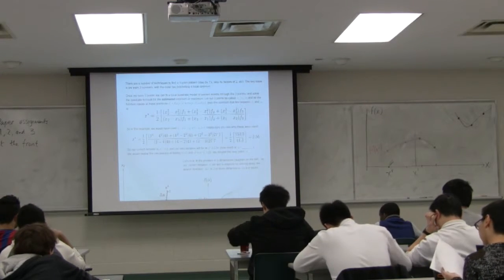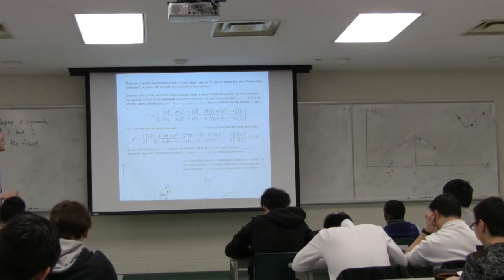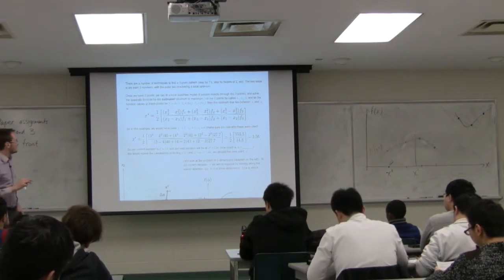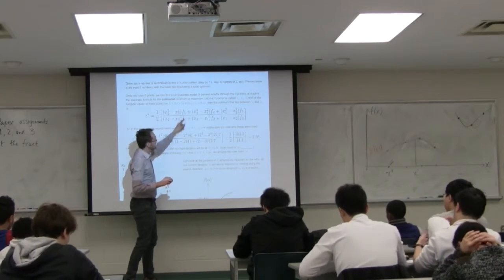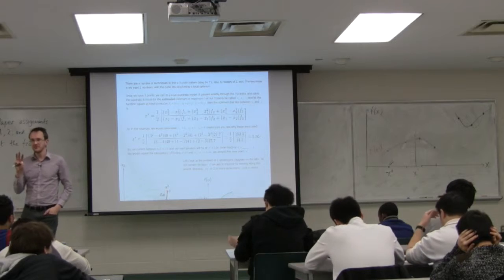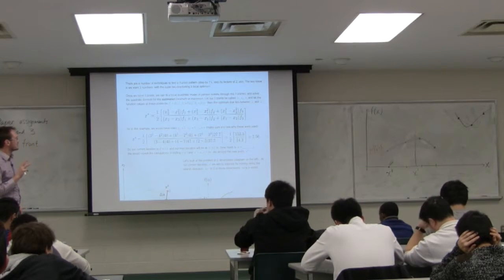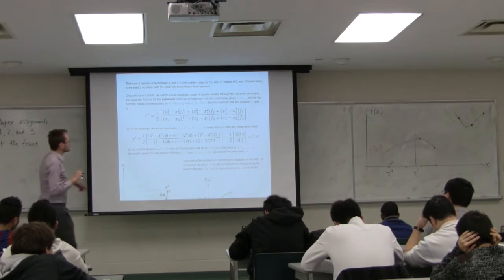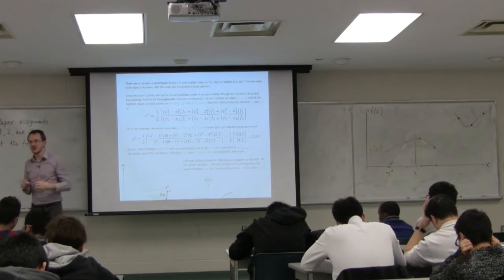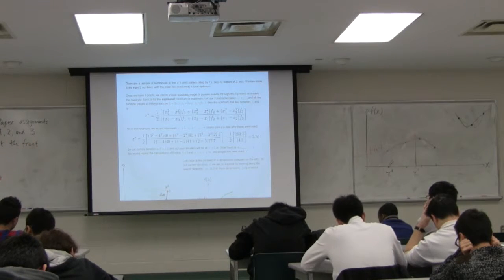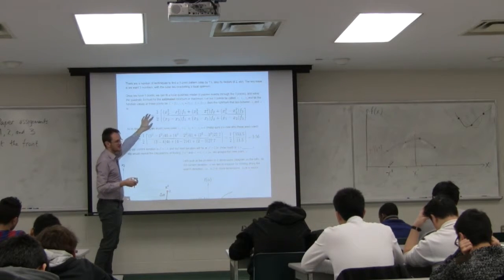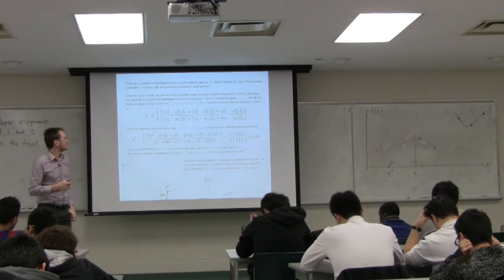If you give three function values F1, F2, F3, evaluated at three levels of x — x1, x2, x3 — the optimum of the fitted quadratic, x-star, is given by a closed-form expression. So take your three-point pattern, identify x1, x2, x3, evaluate the function at those points, and x-star is the optimum of that quadratic. This is the solution to the quadratic equation for three values of x and three function values F1, F2, F3.